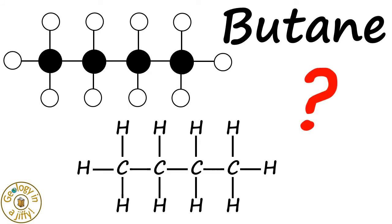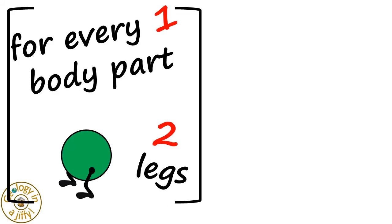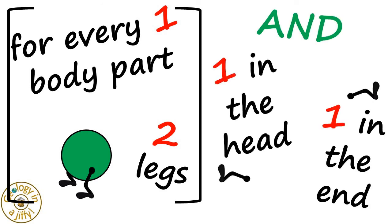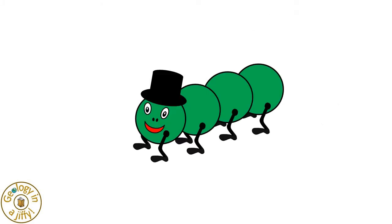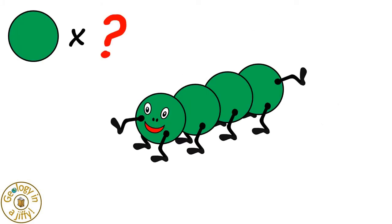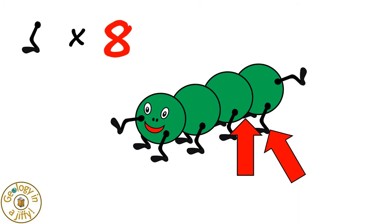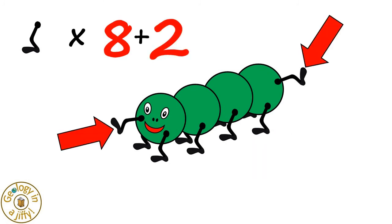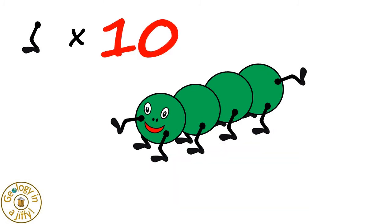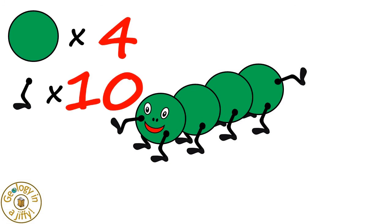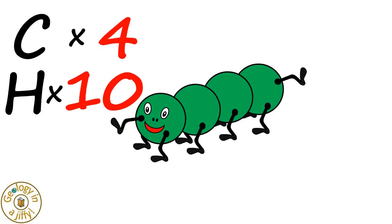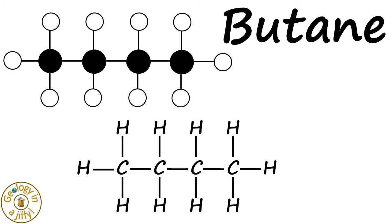What is the formula for butane? Now we know that for every one body part there are two legs, and one leg at the end and one leg at the head. If we remove the hat and add the weird legs, we can count: one, two, three, four body parts, and two, four, six, eight legs — plus two makes ten legs. So we have four body parts and ten legs, meaning four carbon atoms and ten hydrogen atoms. So the formula for butane must be C4H10.